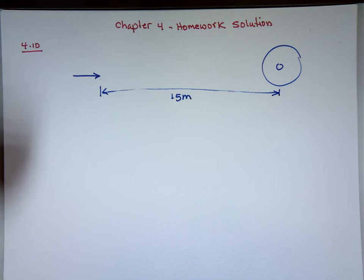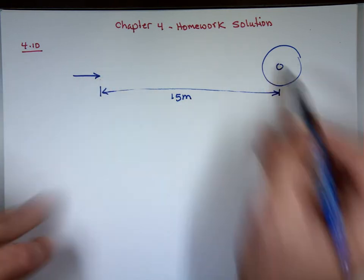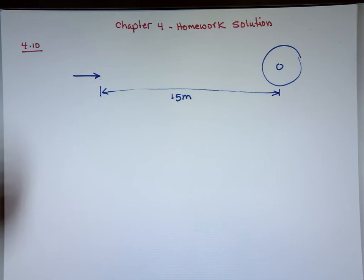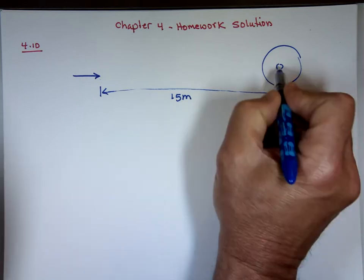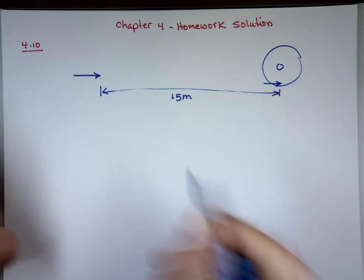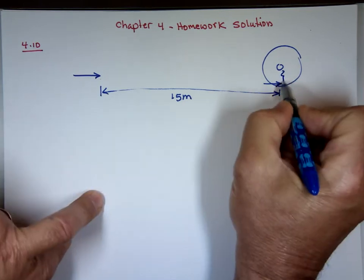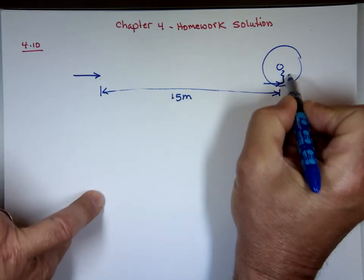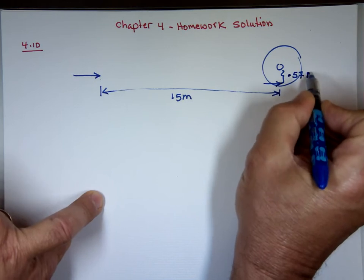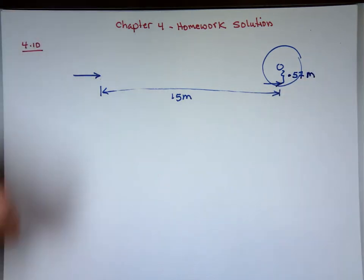The arrow is aimed directly at the center of the target — aimed right there — but hits 57 centimeters below the bullseye. It didn't hit the bullseye; it's stuck right there. That drop is 0.57 meters, which is 57 centimeters.